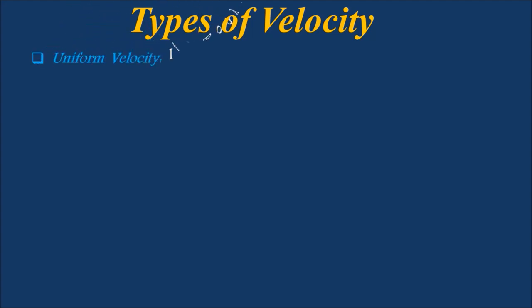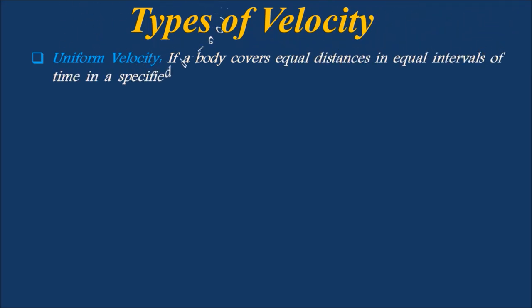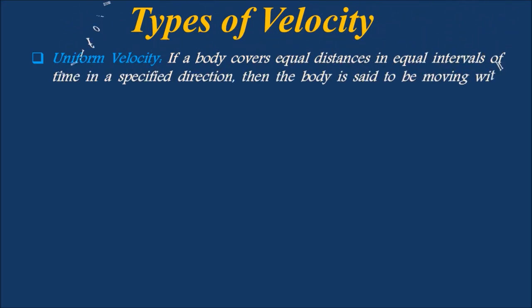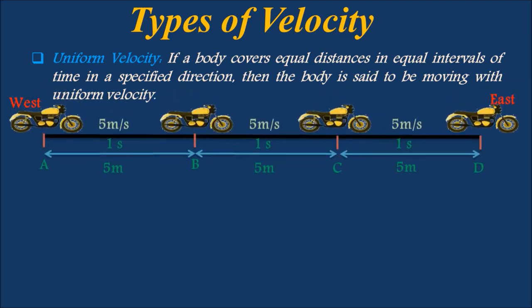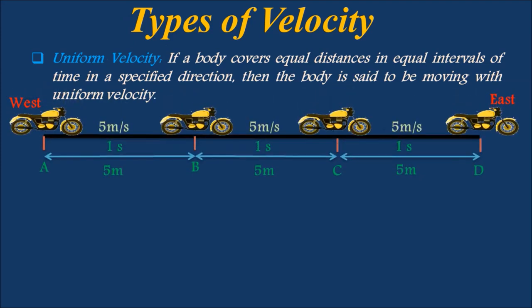If a body covers equal distances in equal intervals of time in a specified direction, then the body is said to be moving with uniform velocity. For example, if a bike covers equal distances of 5 meters along paths A-B, B-C, and C-D in equal intervals of 1 second, then the bike has a uniform velocity of 5 meters per second towards east.